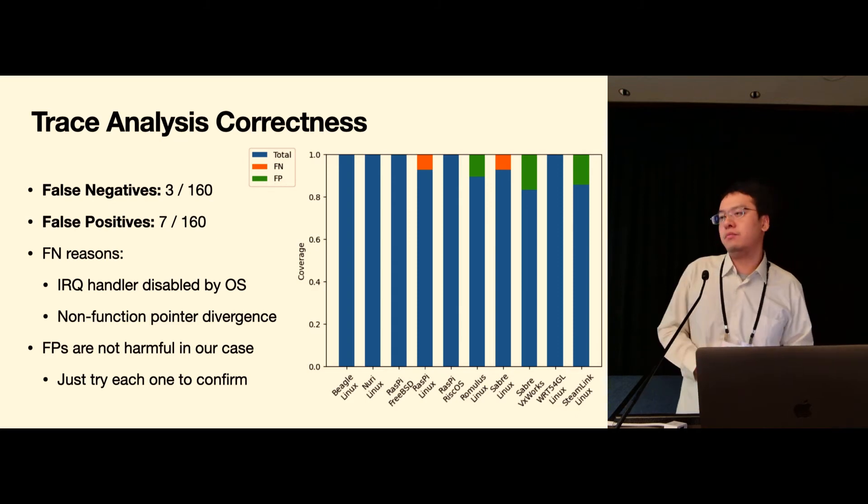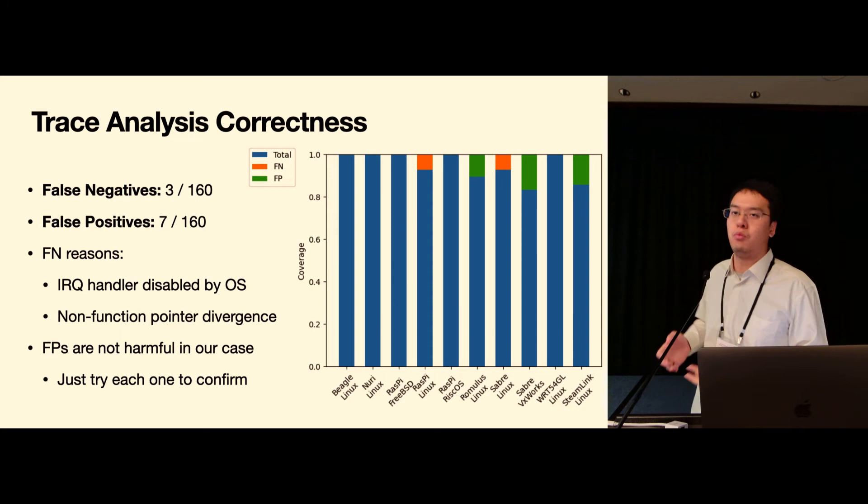So there is no chance that we can still reach these IRQ handlers during the fuzzing. But then again, even though in the original embedded system these IRQ handlers won't be functioning anymore, so we believe that it is fine to have those false negatives here.